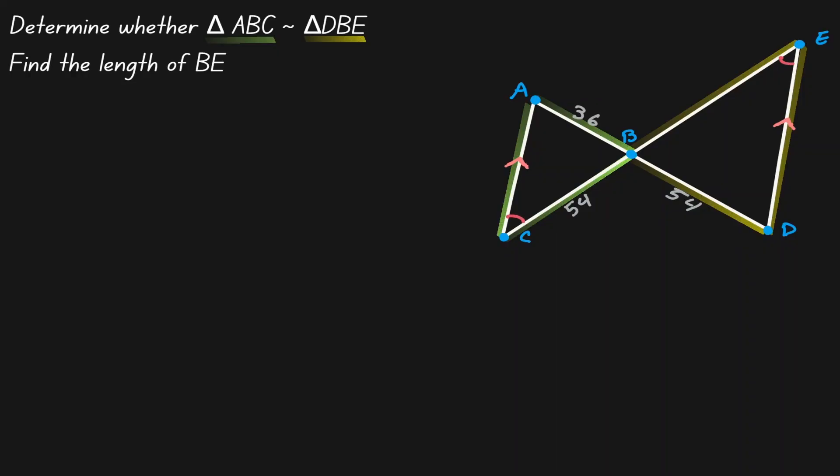In addition, notice that we have two vertical angles — this angle on the right and this angle on the left. With this, we can conclude that these two triangles are similar to each other. We can use the angle-angle similarity theorem, because there are two angles in the green triangle which are congruent to two angles in the yellow triangle.